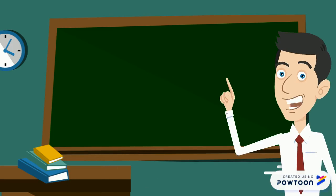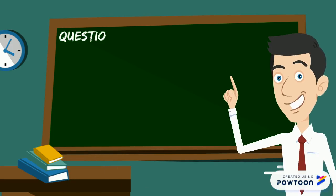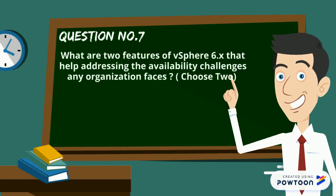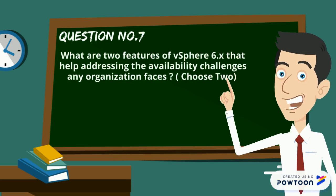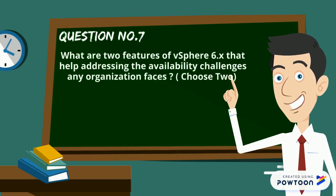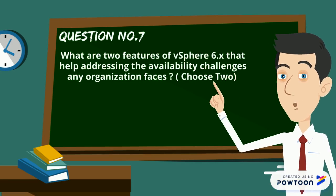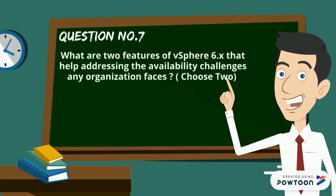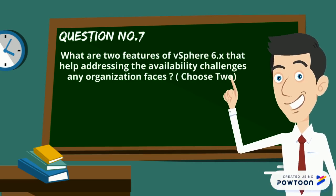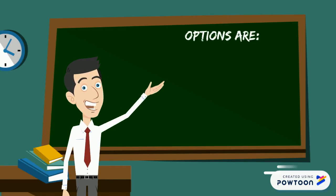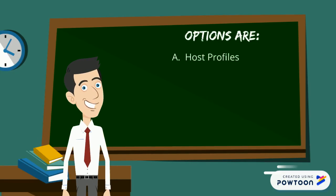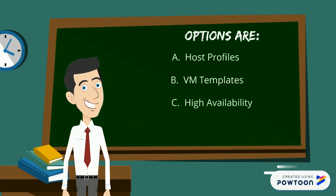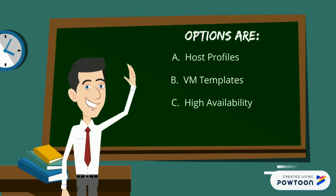Now here goes our question number 7: what are the two features of vSphere 6.x that help address the availability challenges any organization faces? Your options are host profiles, VM templates, high availability, and fault tolerance.